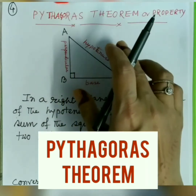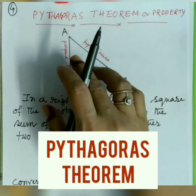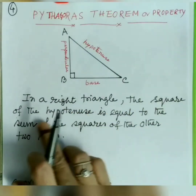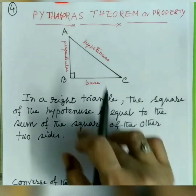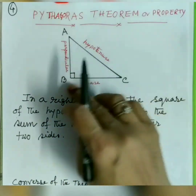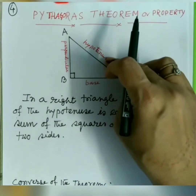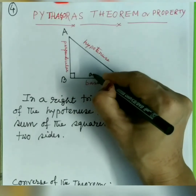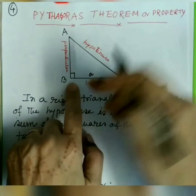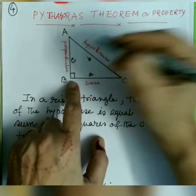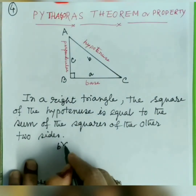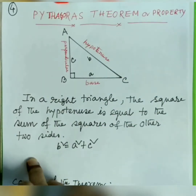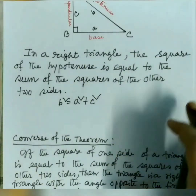Property number 4: Pythagorean theorem. This is a very important one, named after its founder Pythagoras. It states: in a right triangle, the square of the hypotenuse is equal to the sum of the squares of the other two sides. The hypotenuse is the side opposite the right angle. If the hypotenuse is b, and the other two sides are a and c, then b squared equals a squared plus c squared.